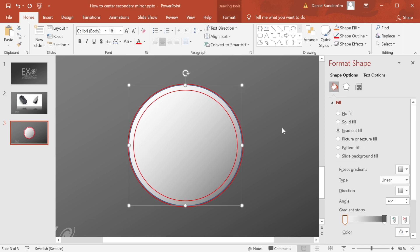But if the secondary mirror is too much towards the primary mirror, it will look like this. And I am exaggerating quite a lot now, but you get the idea.